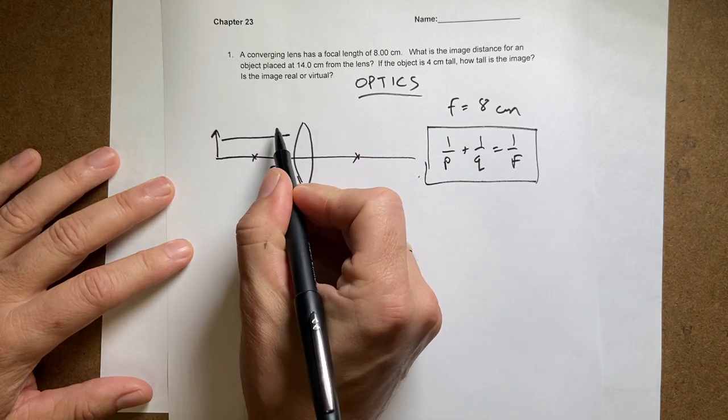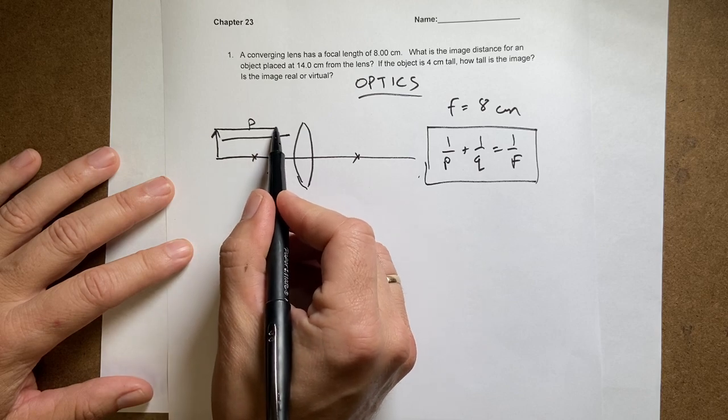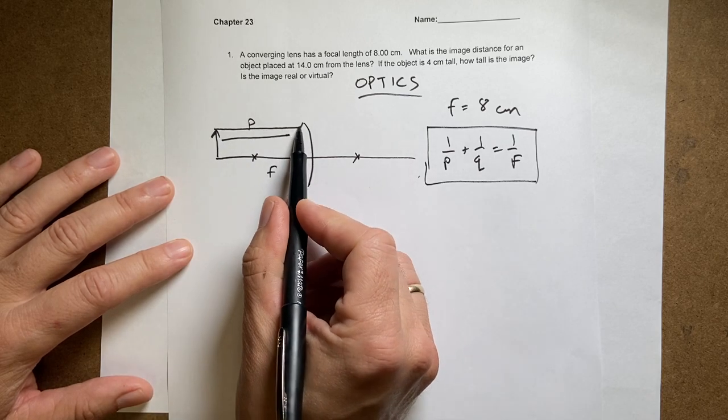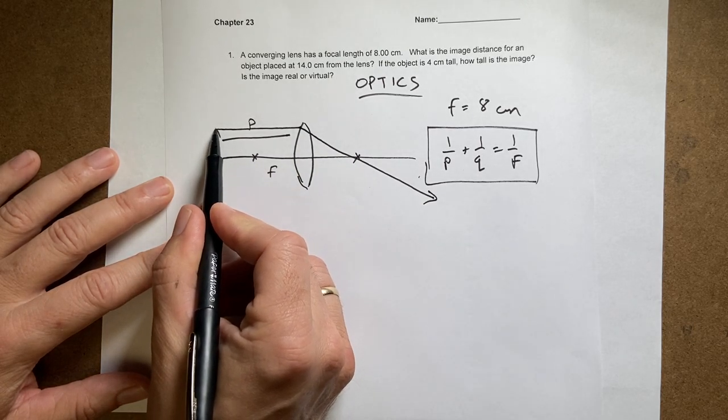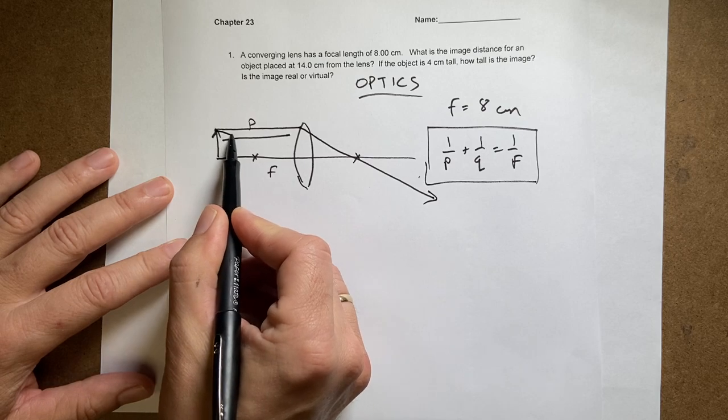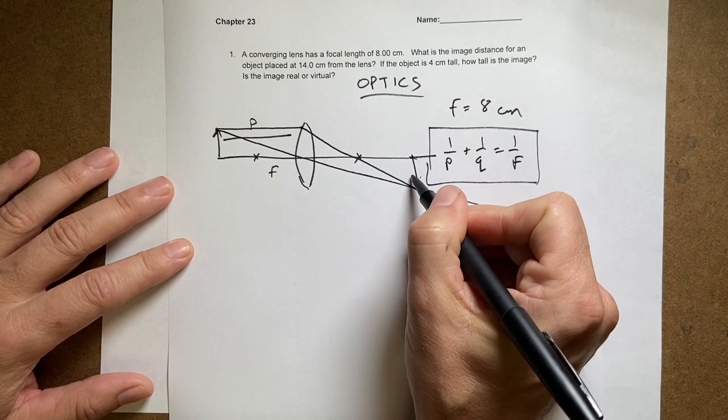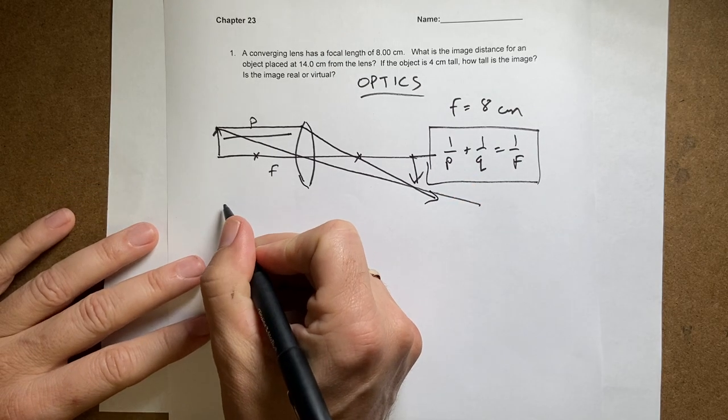This is going to be P. I can just sketch this. A light ray comes off the top and parallel to the axis is going to pass through the focal point. If a light ray goes right through the center, it just goes like that. So I should get—this is just a rough sketch—the image down there. So I want